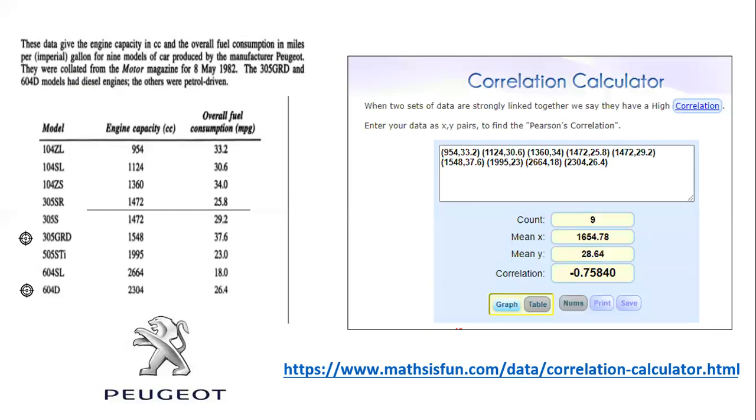You can see here the results of me entering the data in. We've put in those nine data pairs of engine capacity coupled with the fuel consumption and when we do that this particular website points out to us that there is a correlation of negative 0.758.